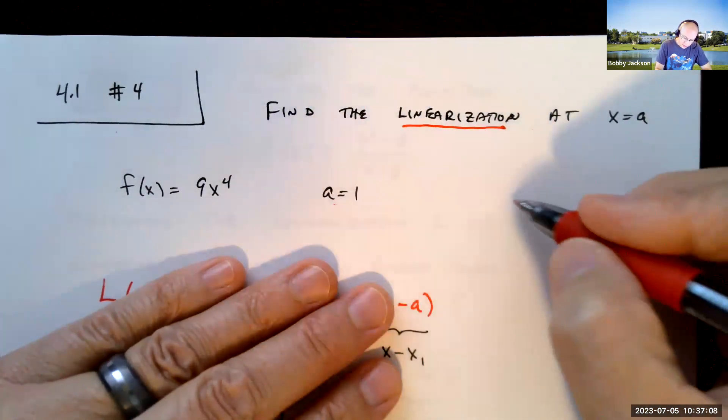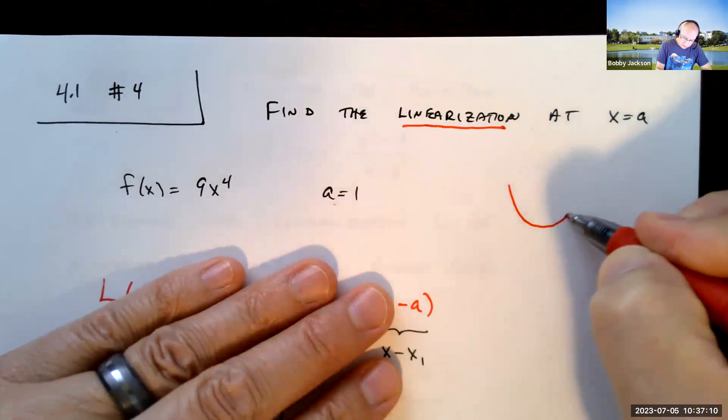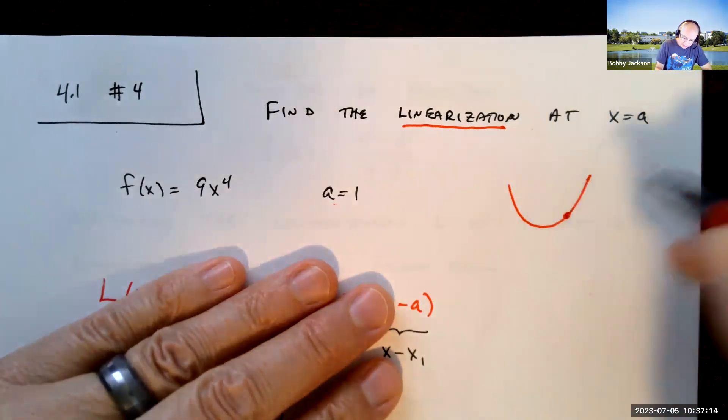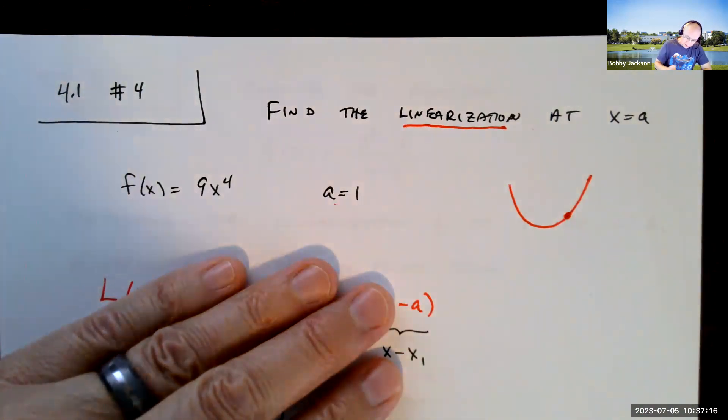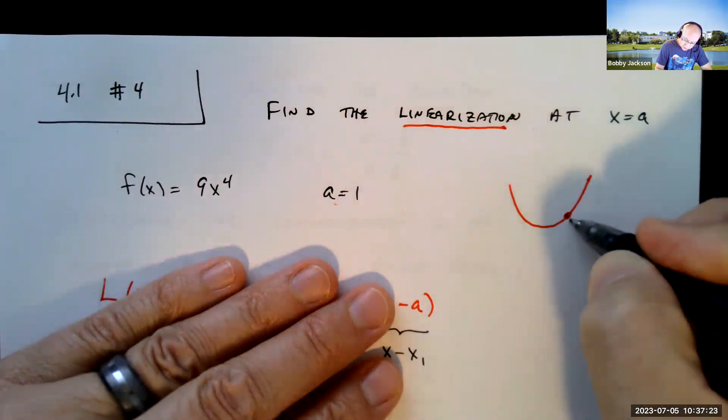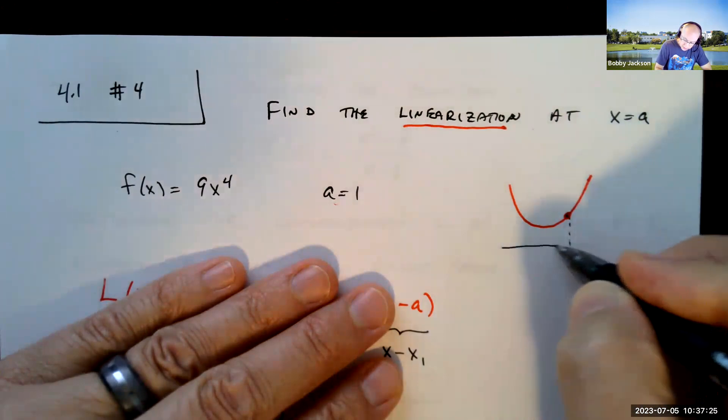again, if we have some function 9x to the fourth, maybe that function looks like that, and near a equal 1, we're trying to estimate the value of the function. We can approximate values of the function near x equal 1, so this is at x equal 1,